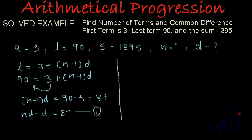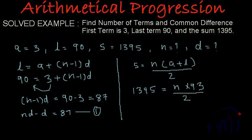And then we have s equal to 1395, and what is the formula for s? s is equal to n multiplied by (a plus l) by 2. And we are given s is equal to 1395, and this will be equal to n. n we don't know so I am going to keep it as it is. a is 3 and l is 90. So a plus l will be 93 and divided by 2.